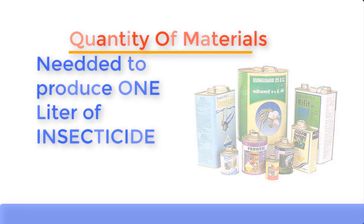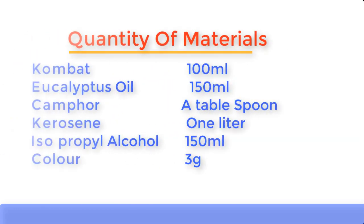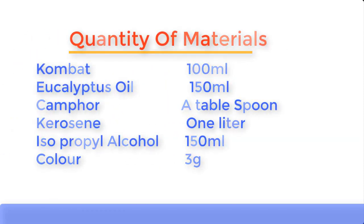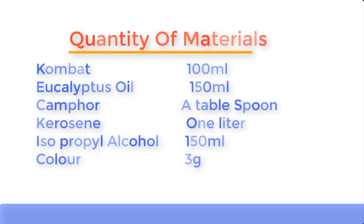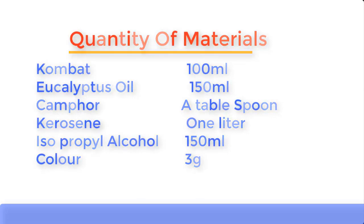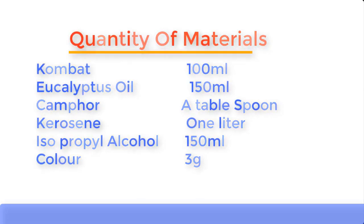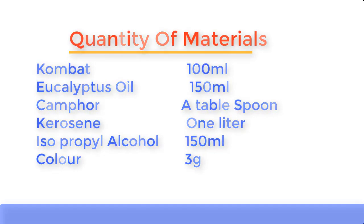Now let's establish the quantity of materials needed to produce one liter of insecticide: compact 100 ml, eucalyptus oil 150 ml, camphor one tablespoon, kerosene one liter, isopropyl alcohol (IPA) 150 ml, and color three grams. Now let me introduce you to these chemicals one by one, and then we'll go into the mixing.